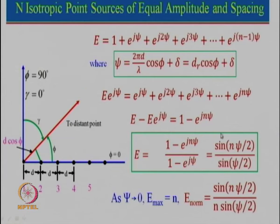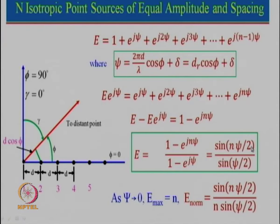After that we did the derivation for a linear array of N elements and found that the array factor is given by sin(Nψ/2) divided by sin(ψ/2). The maximum value is obtained when ψ tends towards 0, because sin(Nψ/2) becomes approximately Nψ/2 and the denominator sin(ψ/2) also becomes ψ/2, so they cancel leaving the value N.